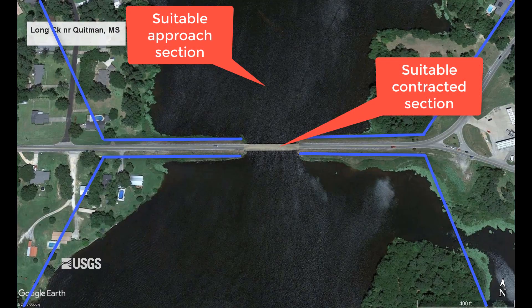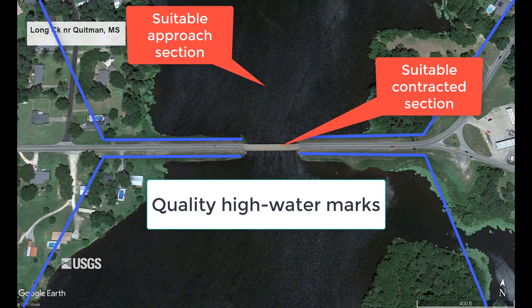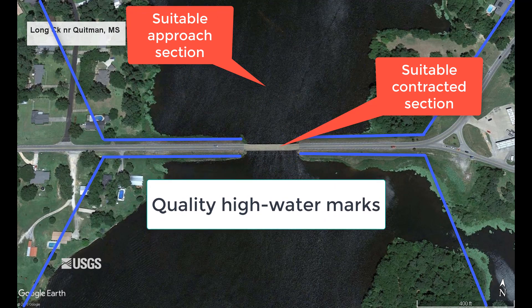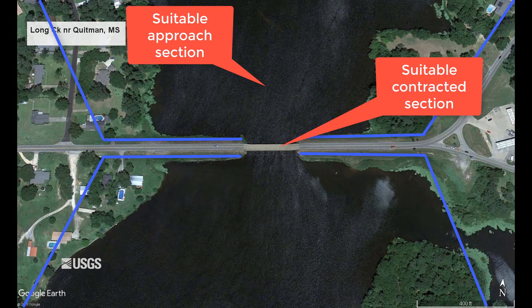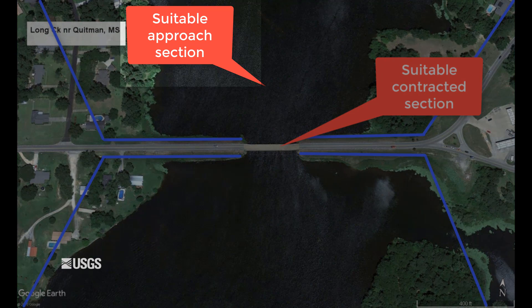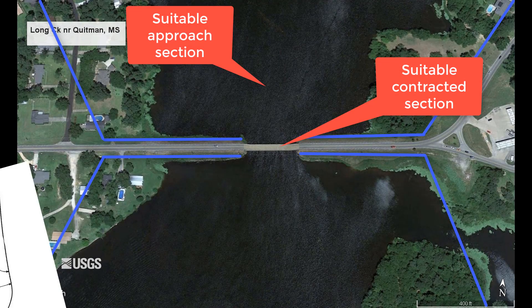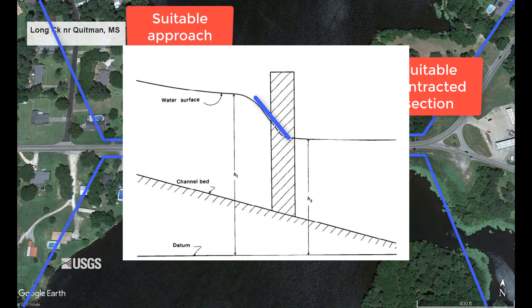The final component, and perhaps the most important of any peak discharge indirect, is quality high water marks. High water marks will be used to determine the water surface elevation at both your approach section and your contracted section. Without accurate marks, the amount of fall between sections will be inaccurate, ultimately leading to an inaccurate discharge.